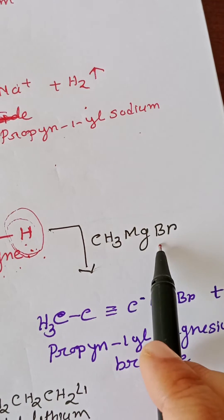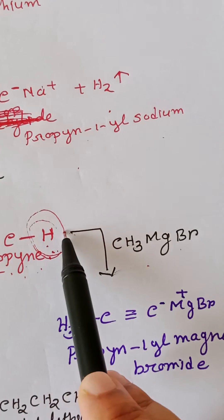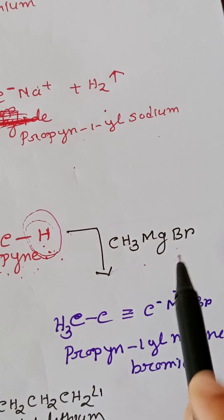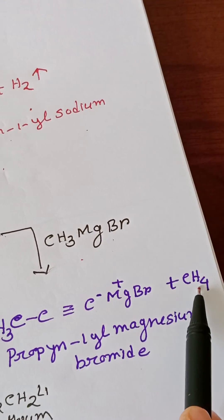Similarly methyl magnesium bromide, the Grignard reagent, also acts as a base. So this hydrogen gets replaced with MgBr. We get propyne vinyl magnesium bromide and methane as a byproduct.